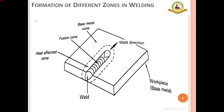In the previous module we discussed about what is welding and the different types of welding. In this module we will be discussing about the metallurgical aspects in welding. First we will move on with the formation of different zones in welding. During the welding process, when the heat interacts with the workpiece material, the flow of temperature in the material varies from region to region, resulting in three distinct zones: the fusion zone, the heat affected zone, and the base metal zone.